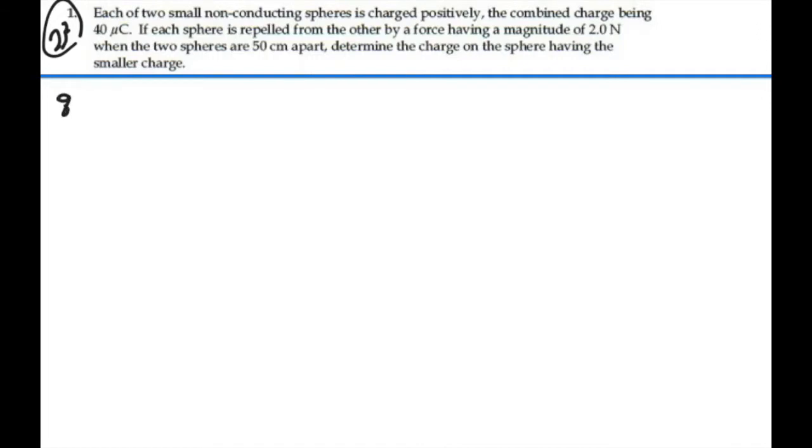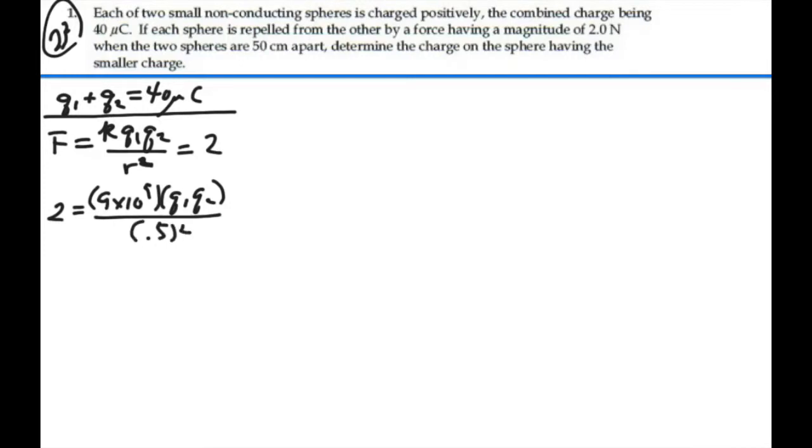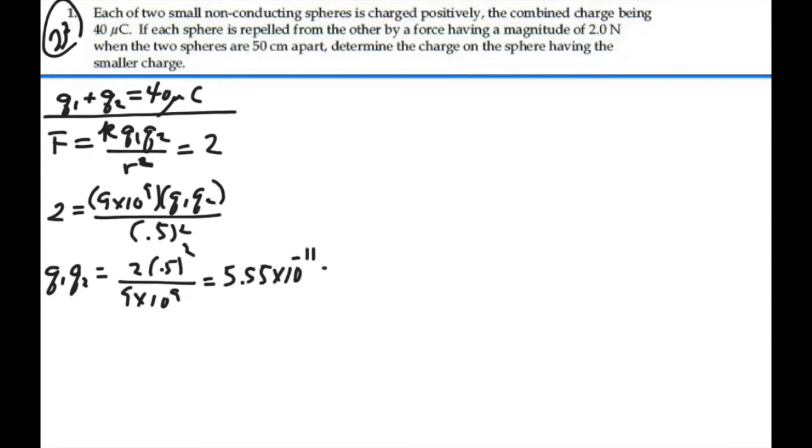We're told that the combined charge Q1 plus Q2 is 40 microcoulombs. We're also told that the force between them when they're 50 centimeters apart — which is the Coulomb force, K·Q1·Q2 over R squared — is equal to 2 newtons. So that means 2 newtons equals 9 times 10 to the 9 times Q1 times Q2 over 0.5 meters squared. Solving, Q1 times Q2 equals 5.55 times 10 to the minus 11 coulombs squared.